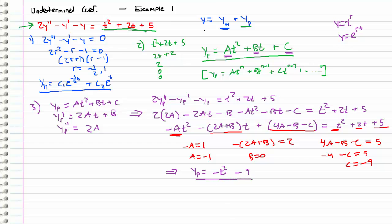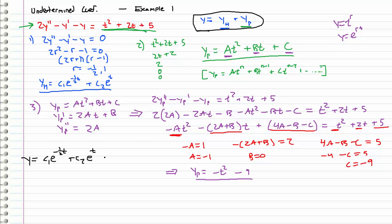Now we have both components of our general solution. So y equals the homogeneous part, which is c1 e to the negative one half t plus c2 e to the t, plus our particular solution, so minus t squared minus 9. This is our final answer.